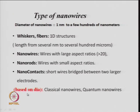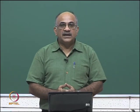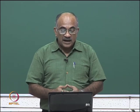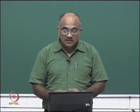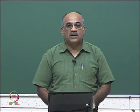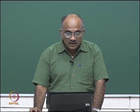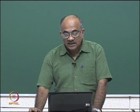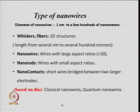If the diameter is very large, quantum mechanical effects disappear — so if the diameter is very small we call them quantum nanowires, and if the diameter is very large they are classical nanowires. Based on diameter alone, you can classify between classical and quantum nanowires.